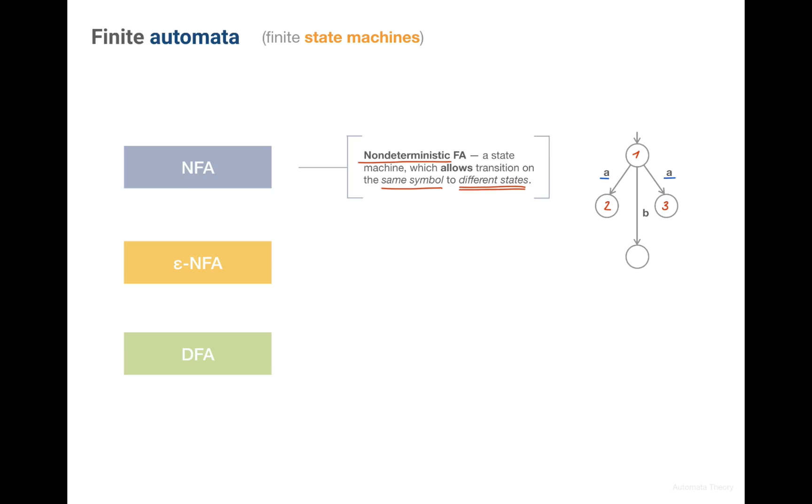Practically this means if we are in state 1 and we consume character A from the string, we don't know where to go. To state 2 or to state 3 or maybe to both of them.